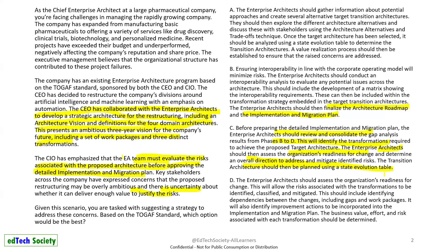Answer C mentions the gap analysis, identifying transformations for the proposed target architecture, and organization readiness — which is actually a business transformation readiness assessment, and is not specifically part of Phase E. It's not specific enough to risk justification, so it might be an answer but not the best. Answer D says: the enterprise architect should assess the organization's readiness for change, which will allow risks associated with transformations to be identified, classified, and mitigated.